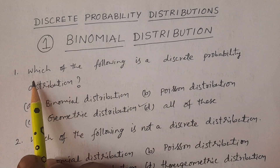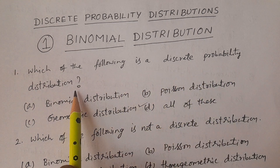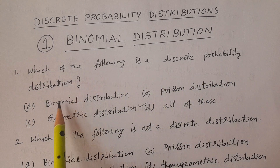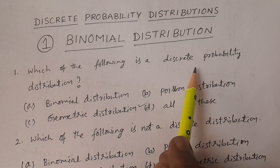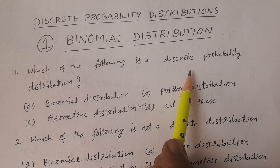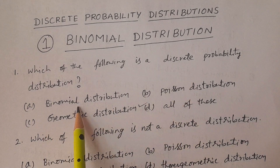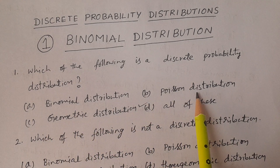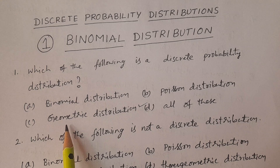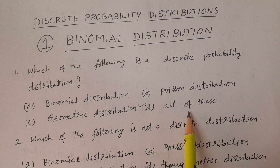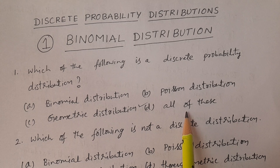Question number one: Which of the following is a discrete probability distribution? Options: A. Binomial distribution, B. Poisson, C. Geometric distribution, D. All of these. The correct answer is all of these — binomial, Poisson, and geometric are all discrete probability distributions. So the correct option is D, all of these.